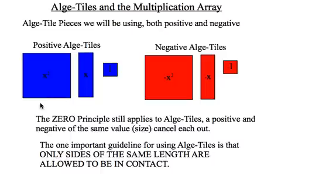Positive alge-tiles are blue, negative alge-tiles are red, and a reminder of the main rule here is that the alge-tiles can only contact along the same side lengths.